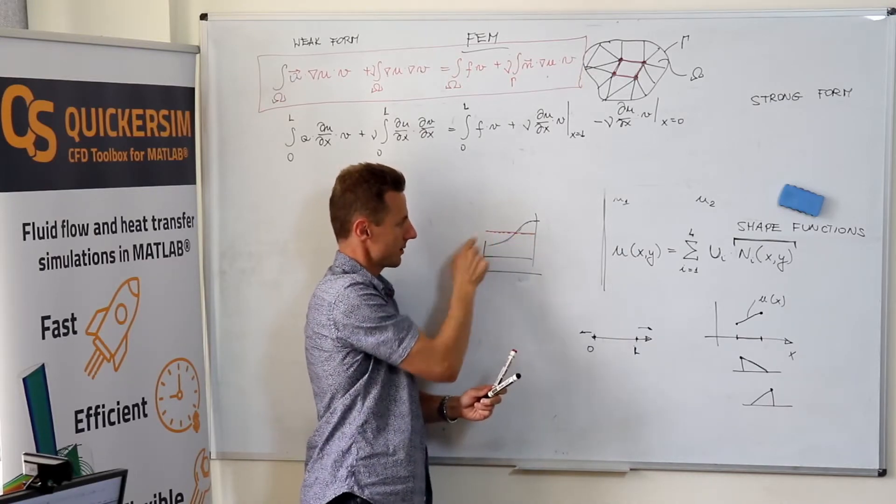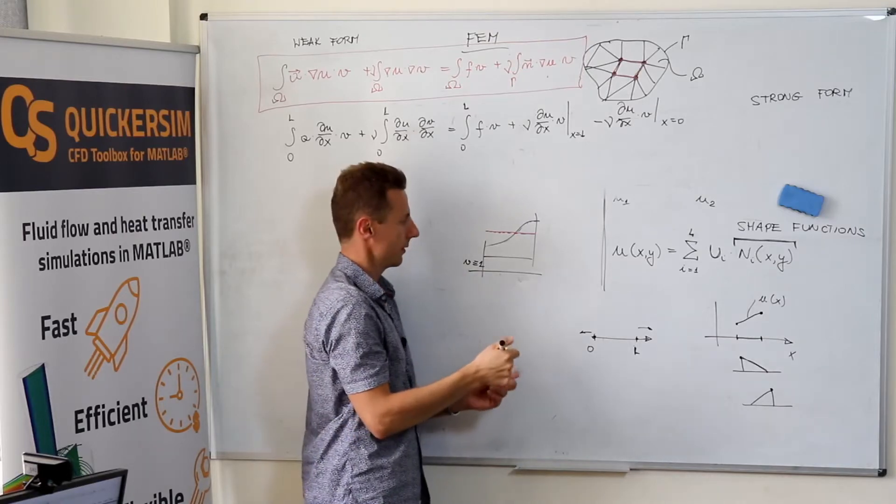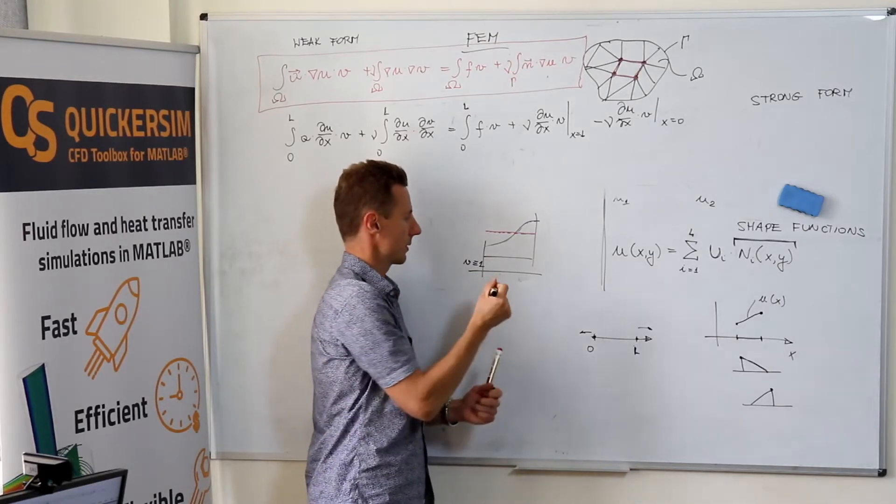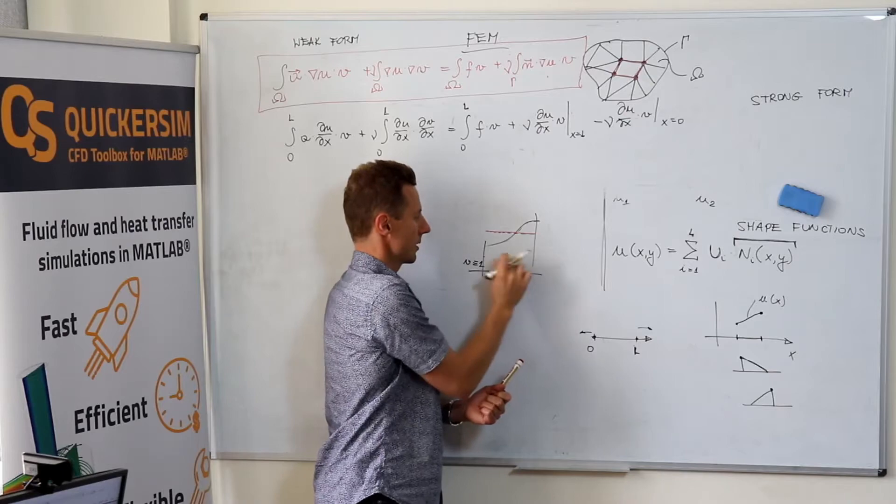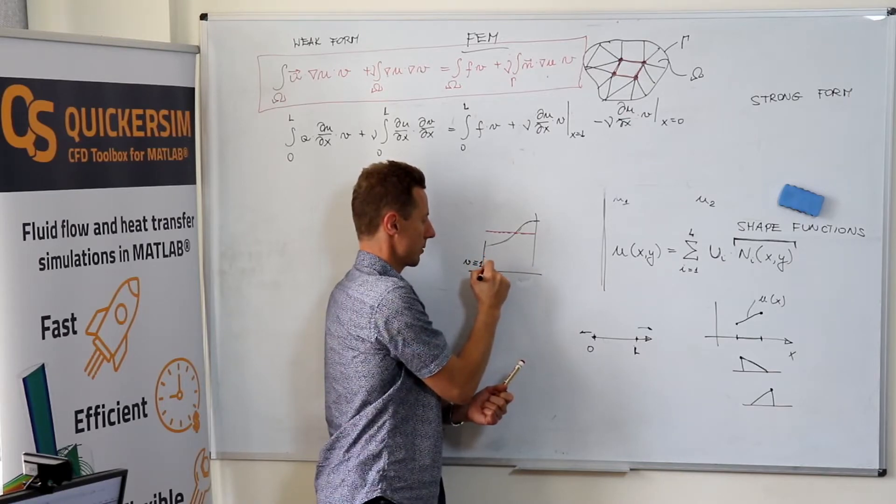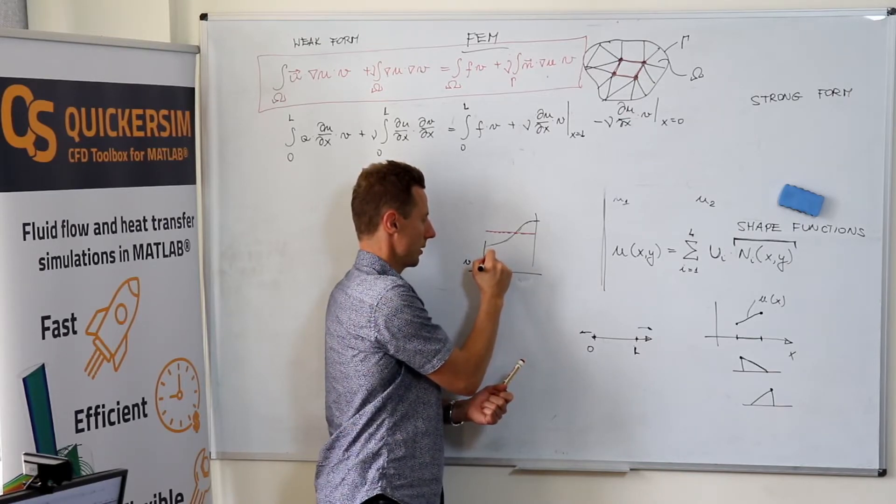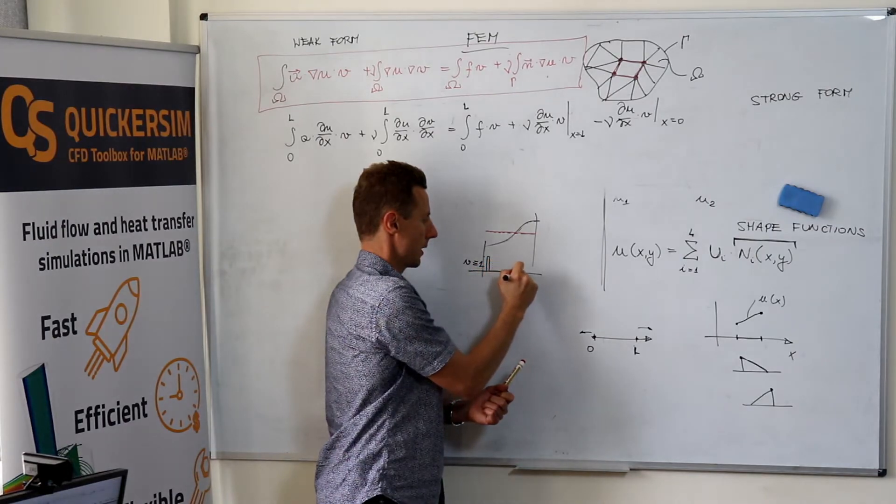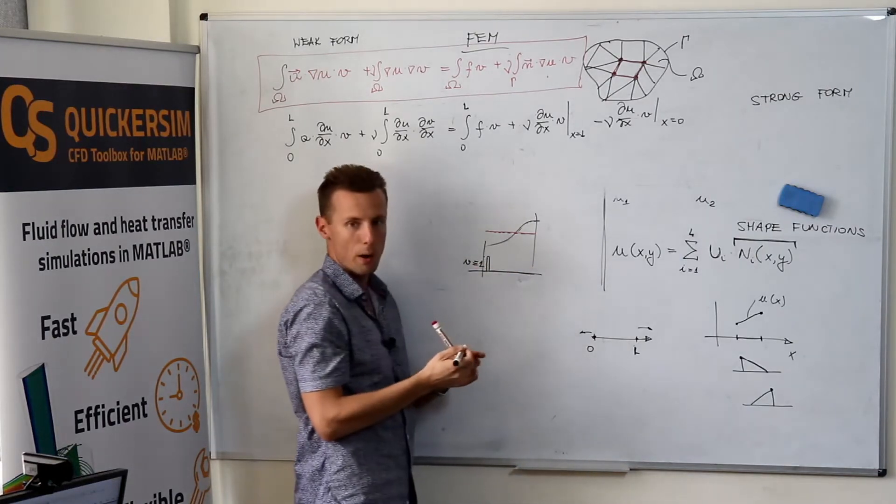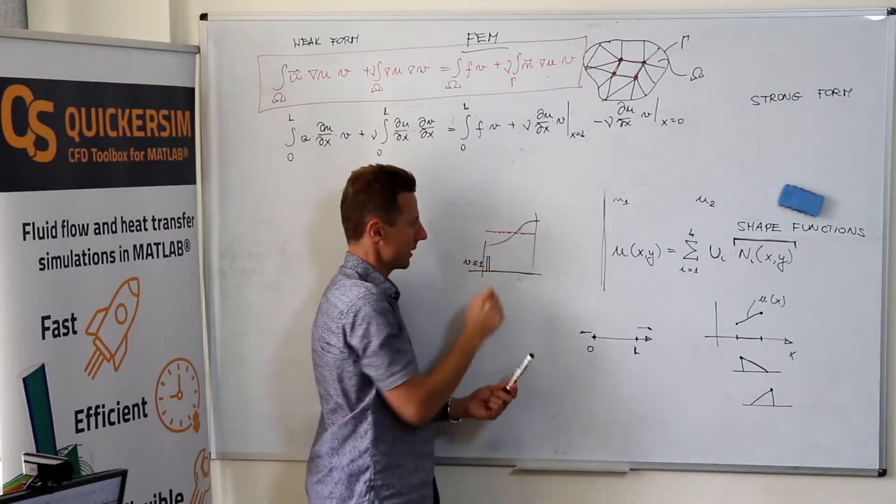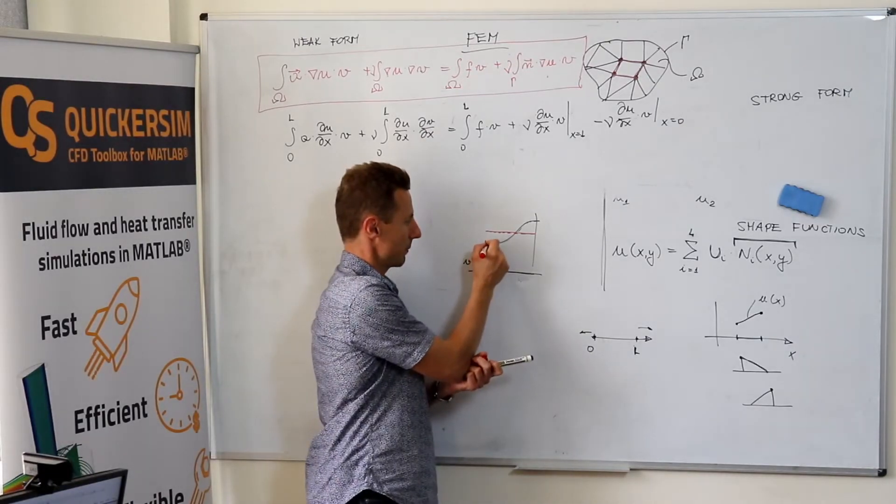And the equality must still hold. So if this is fulfilled for v equal everywhere one, then you can think of having such a function that is zero, zero, zero, and only tests whether the solution in a tiny interval here is the same.